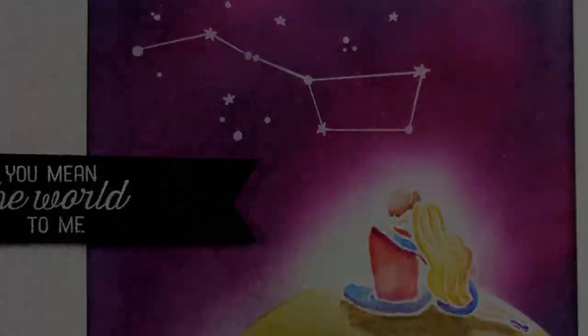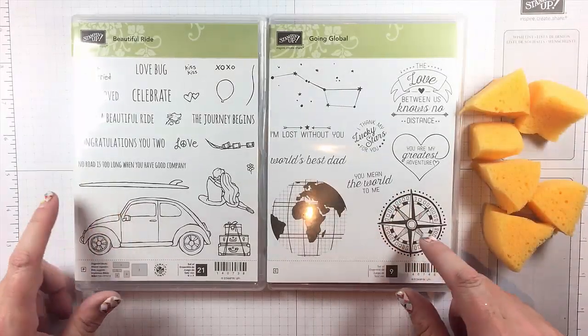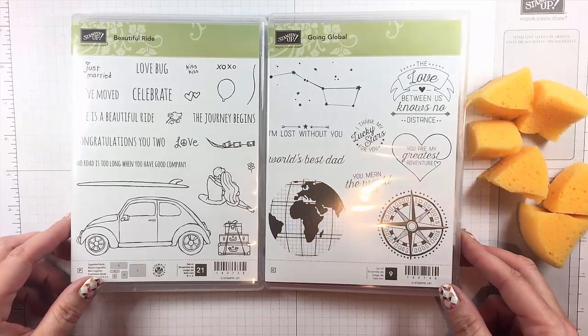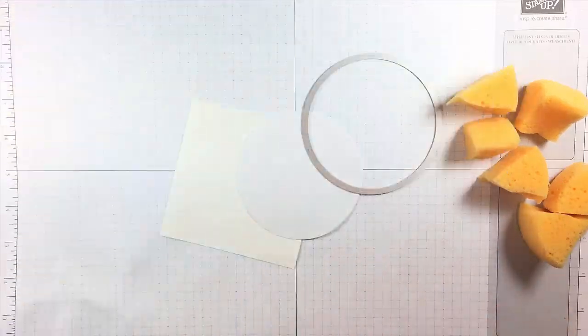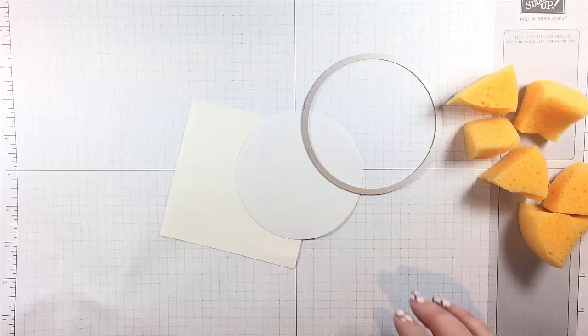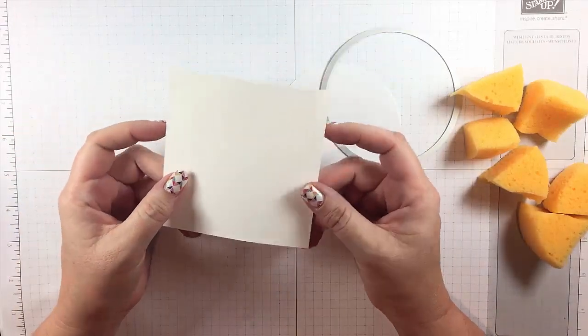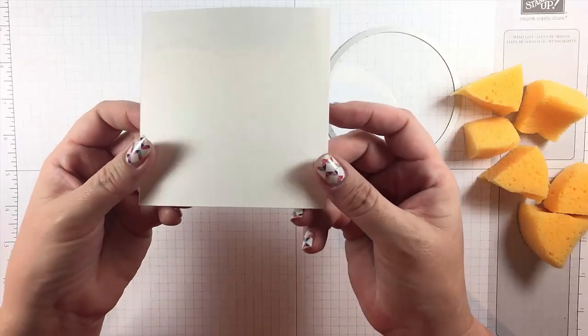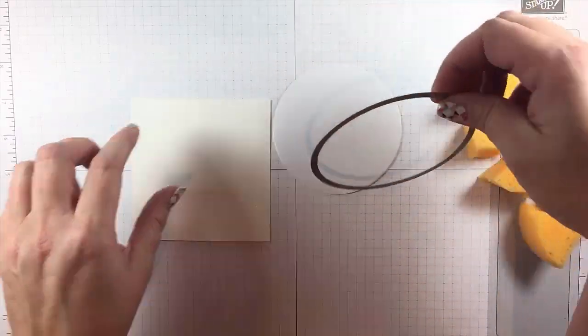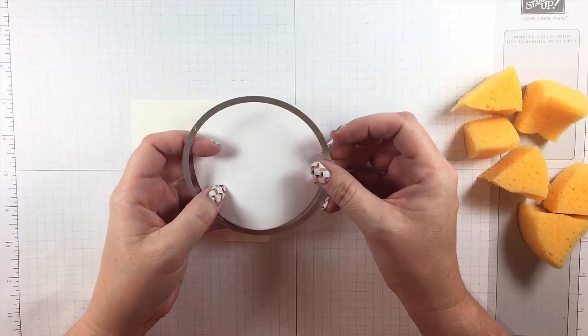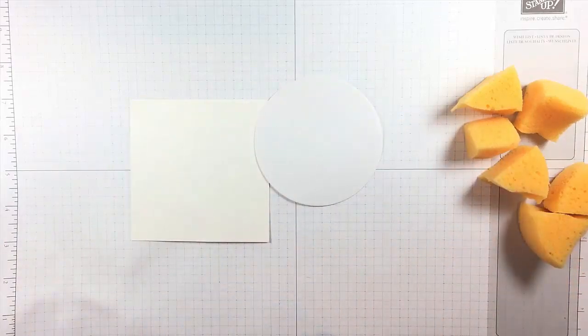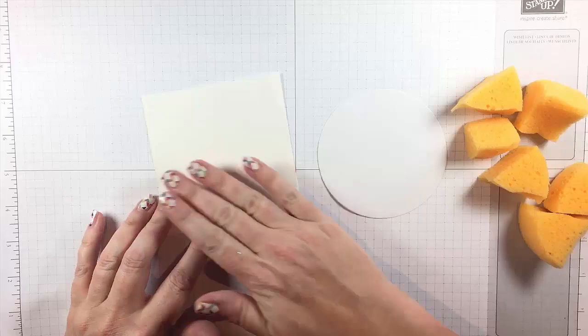I'm using the stamp sets Going Global and Beautiful Ride. These will be in the upcoming Stampin' Up! Occasions mini catalog which you can get your hands on in January, and I've embossed both images on watercolor paper and also die-cut using the circles framelits.